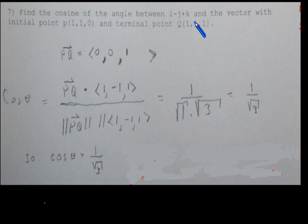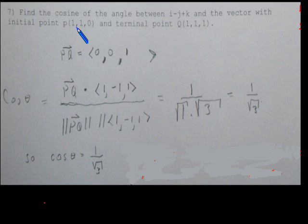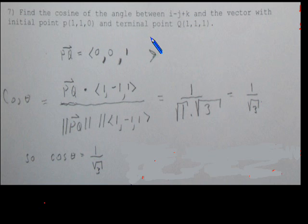We first have to find the component form of this vector given by the initial and terminal points. The component form is obtained by subtracting the coordinates of the initial point from the terminal point. So we get 1 minus 1 equals 0, 1 minus 1 equals 0, and 1 minus 0 equals 1. That gives us the component form (0, 0, 1).